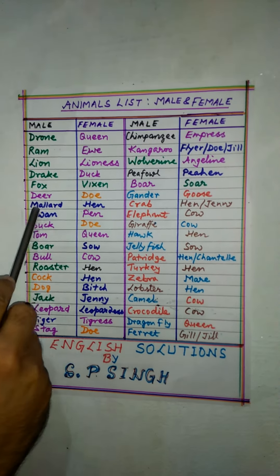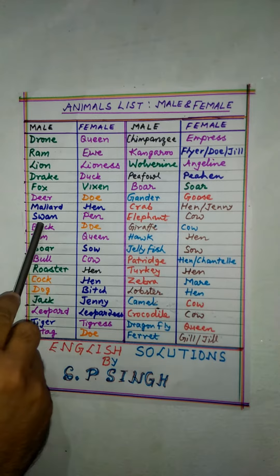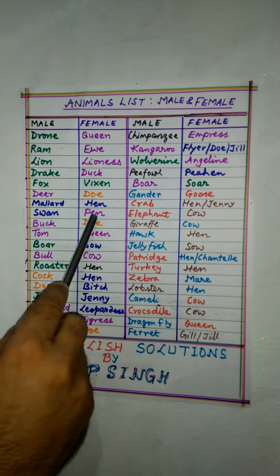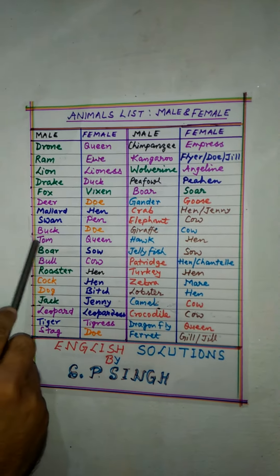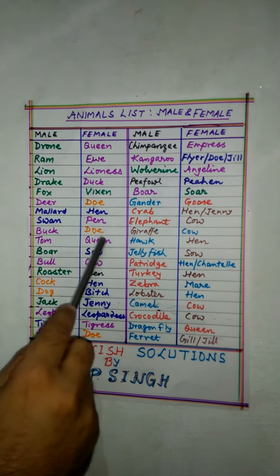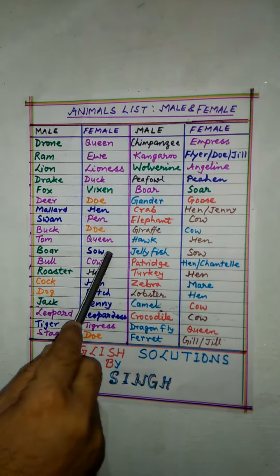Deer — doe. Mallard — hen. Swan — pen. Buck — doe. Tom — queen. Boar — sow.